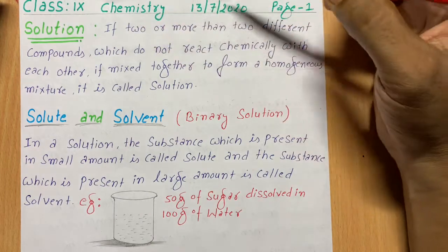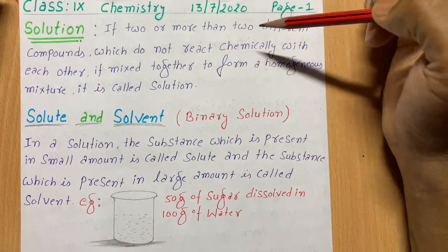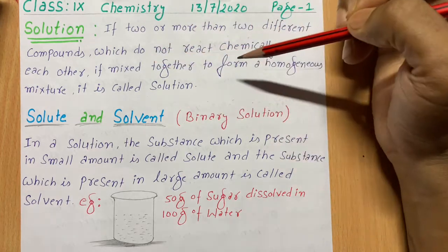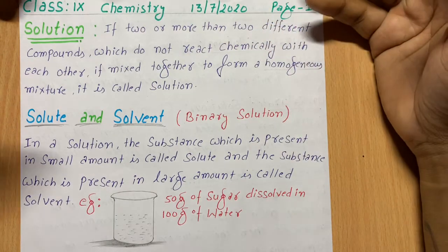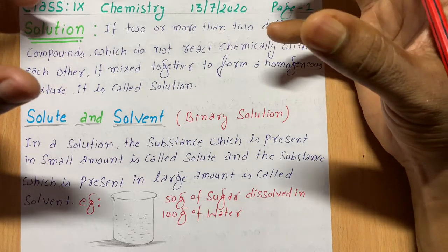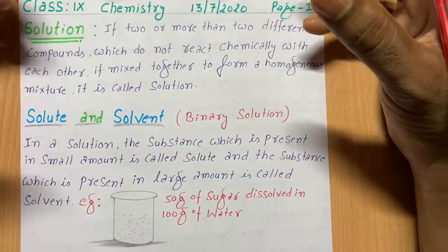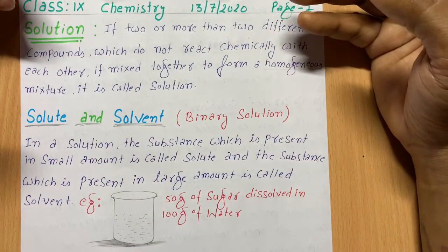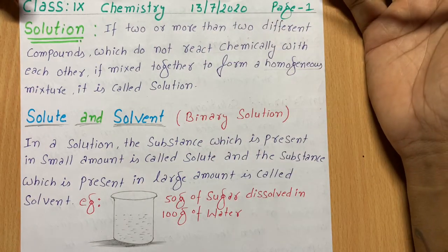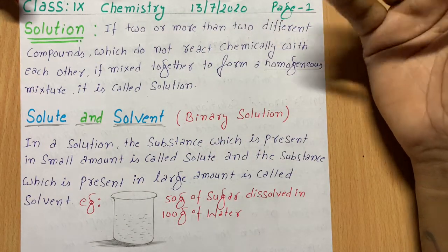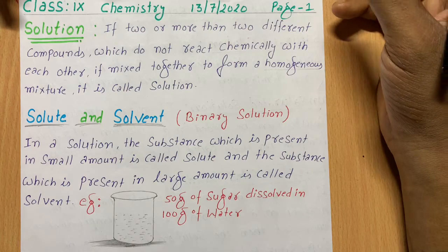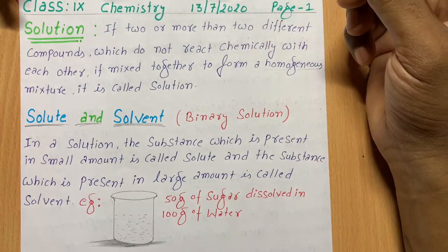If two or more than two different compounds do not react chemically with each other, and you mix them together to form a homogeneous mixture, it is called a solution. Examples include air, because many different gases are present, and also milk mixed with water.